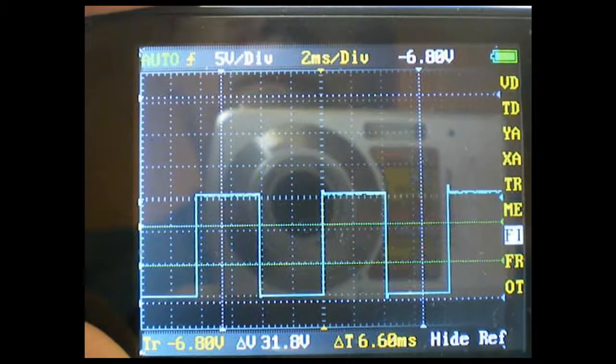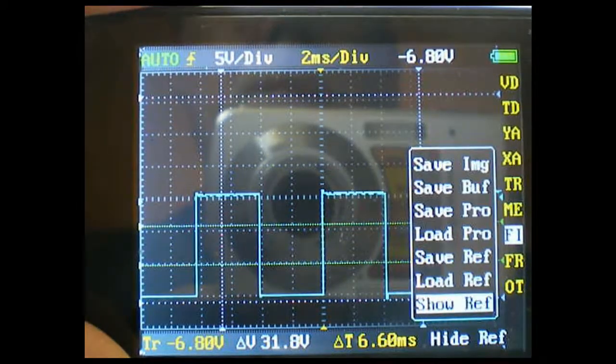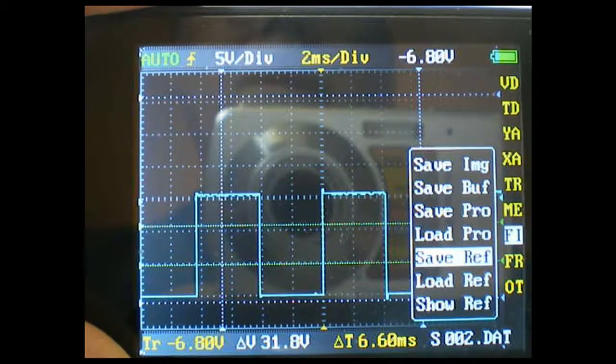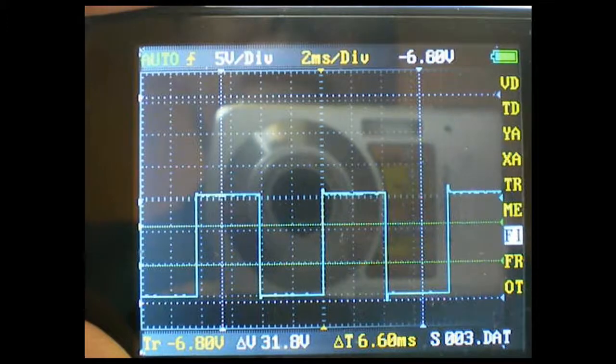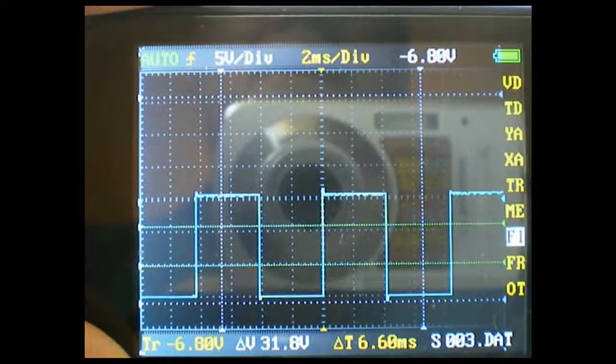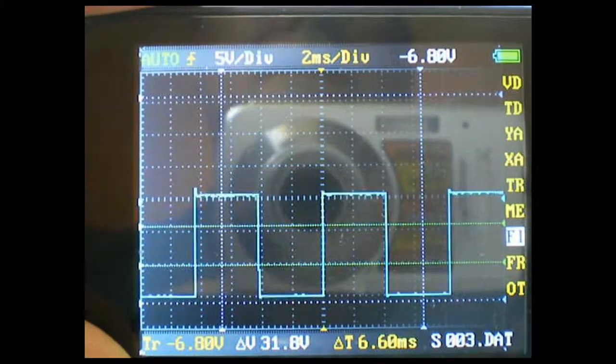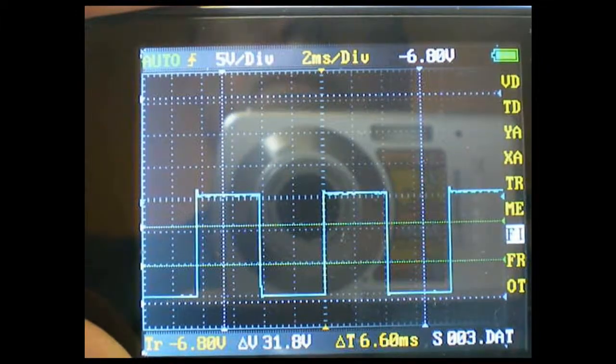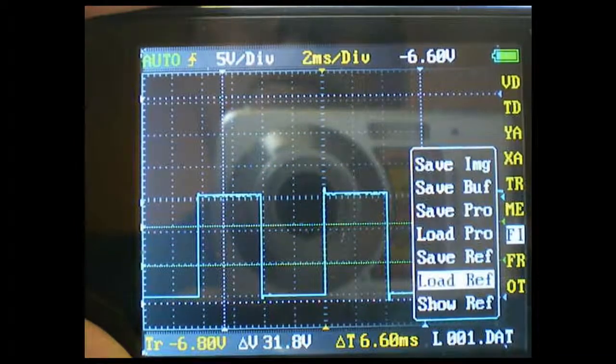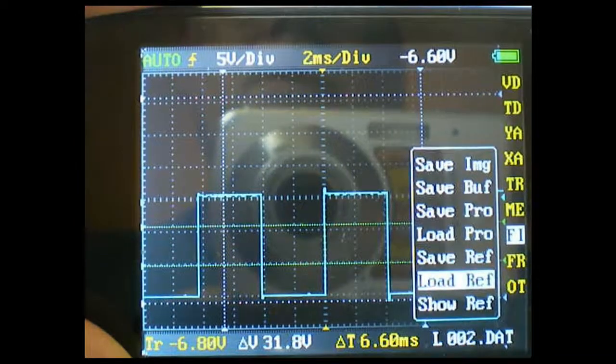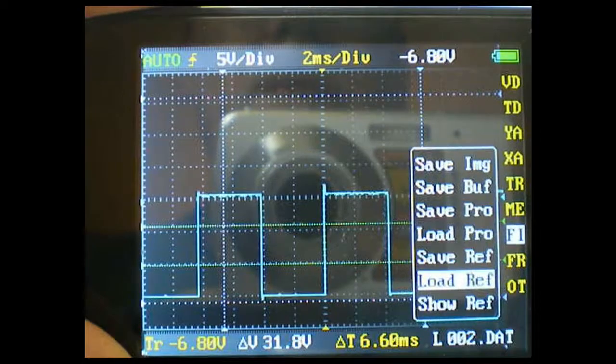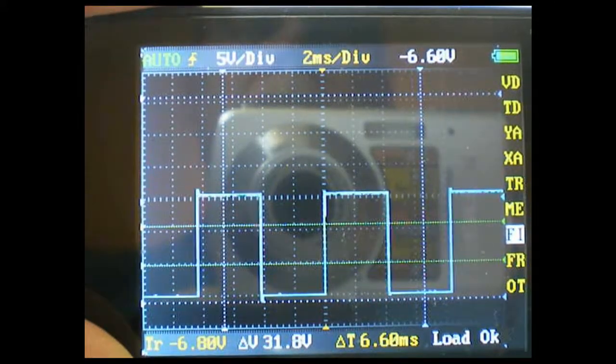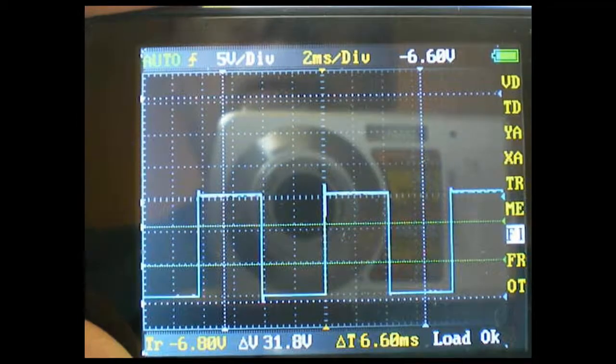What we're going to do now is we're going to save a reference file for that waveform. We'll come down here to our file input-output. We'll save the reference. We'll go call it S002-DAT. Okay, it's been saved because the file name down here changed to S003-DAT. All we're going to do is load that reference waveform. I'm slipping down here and I'll load the reference. I'm going to scroll over to S002-DAT. I'm going to hold the M key and load the reference waveform now that it's visible.